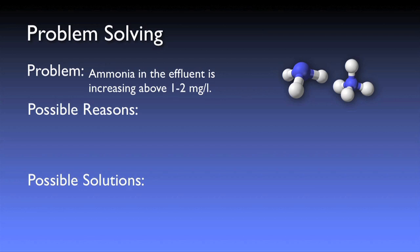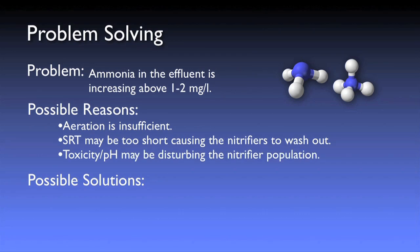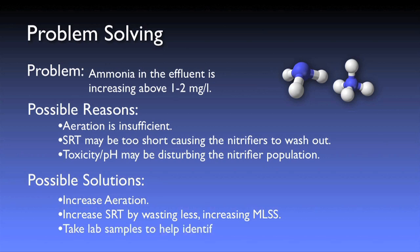We know that nitrification is an oxygen-hungry process — perhaps the aeration is insufficient. We also know that nitrifiers grow more slowly, so perhaps the SRT is too short due to an influence of temperature. And we know that nitrifiers are very sensitive to changes in pH or toxic conditions, so perhaps this performance loss is due to a disturbance of that nature. If low DO is the culprit, full nitrification will return by increasing aeration. If temperatures have dropped, the SRT may need to be increased to maintain a healthy nitrifying population. If pH or toxicity is the culprit, certain specific actions may be required depending on the exact cause.